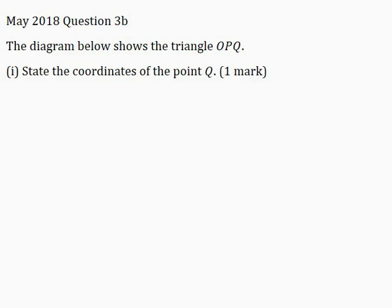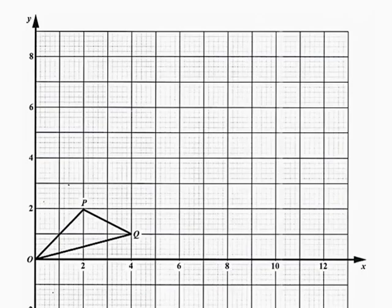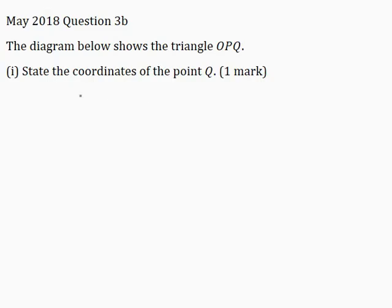Part 1: State the coordinates of the point Q. Now in our diagram here, this is point Q, and Q is located at (4, 1). So I'll write here Q(4, 1).